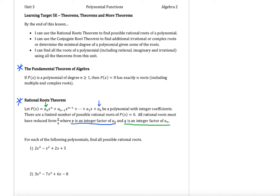In examples one, two, and three, for each polynomial we're going to list all of the possible rational roots. The rational roots theorem uses this p over q concept. P is an integer factor of our constant term, and we write out the factors of that constant term. In example one, our constant term is 5, so our p values will be the factors of 5. Our leading coefficient in example one is 2, so our q terms will be the factors of 2.